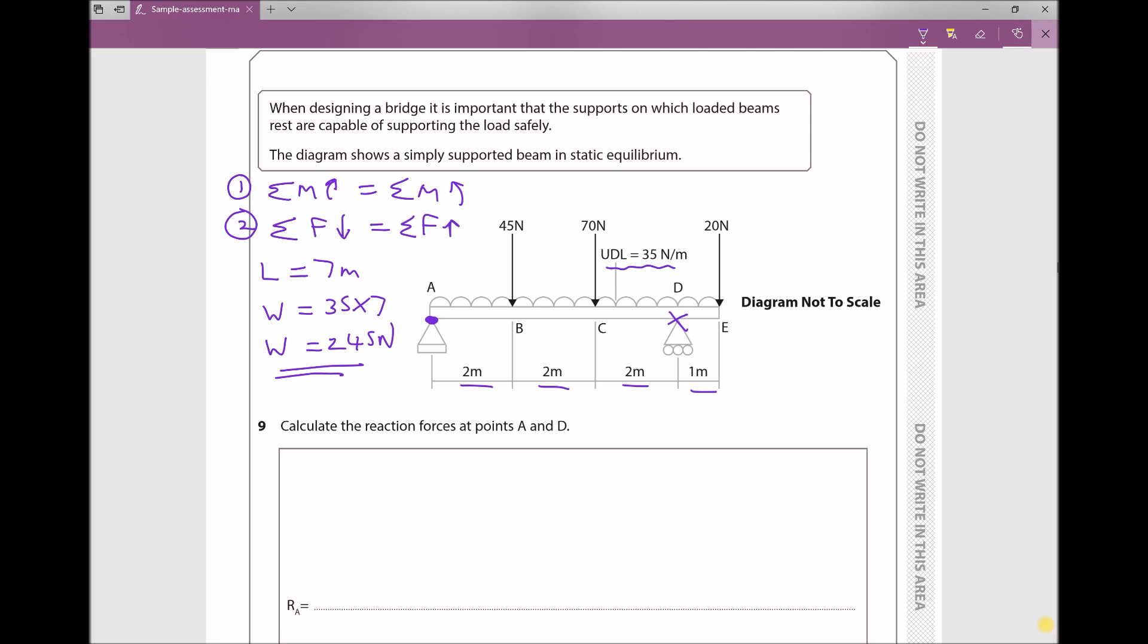So at the center of the beam I need to add the weight of 245 newtons. The weight of 245 newtons is going to act in the center of the beam at a distance of 3.5 meters from the left-hand support because the beam is 7 meters long.